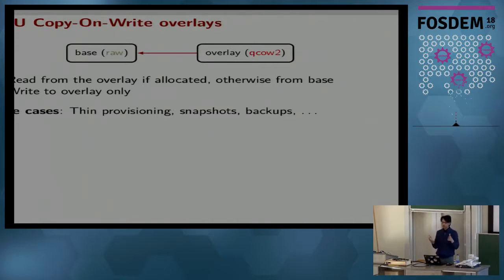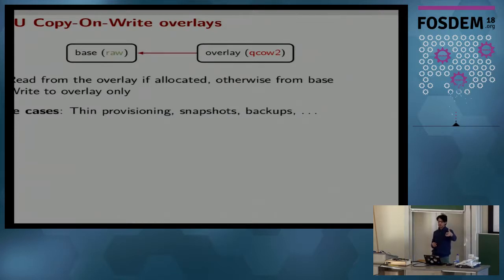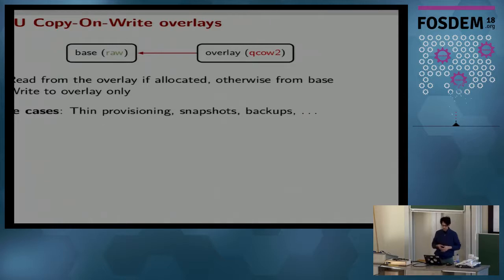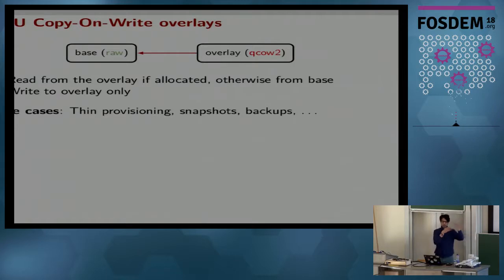When you have a simple backing chain, whenever QEMU tries to read a cluster, it reads from the existing overlay if it is allocated, or else it traverses the backing chain and reads from the base image — and then QEMU does some caching. All writes happen on the overlay image. There are several use cases: the one I just mentioned is thin provisioning, where the Fedora image is the base, and you can create multiple overlays based on it — giving out different thinly provisioned disk images to users — and snapshots and backups.